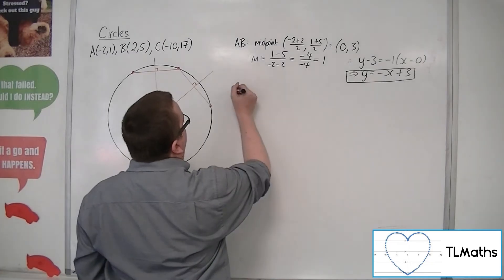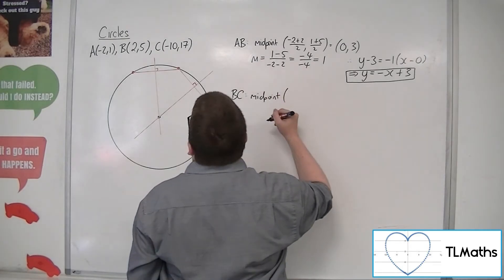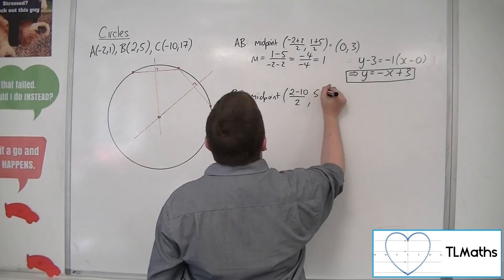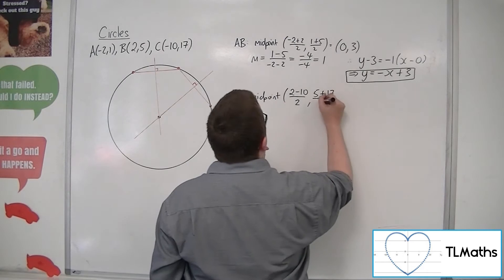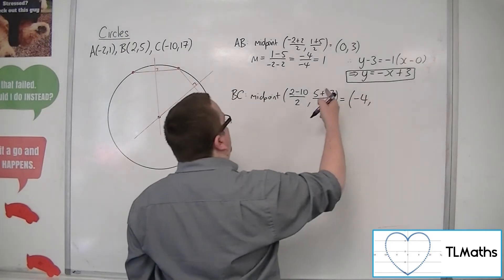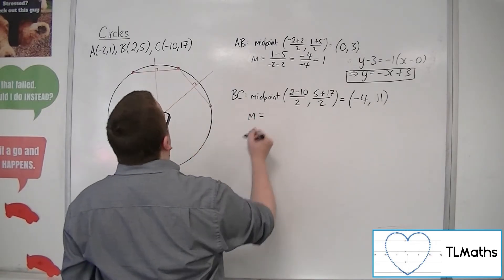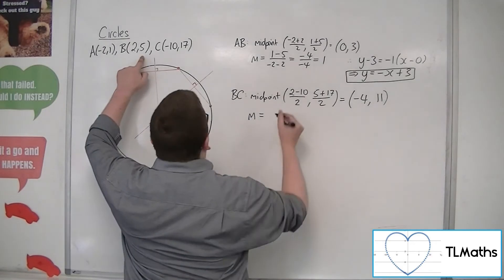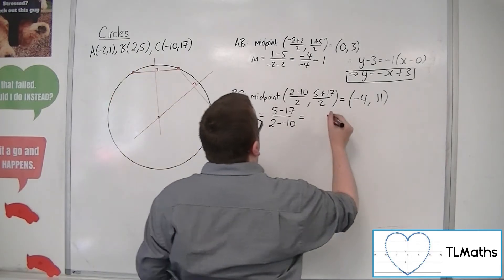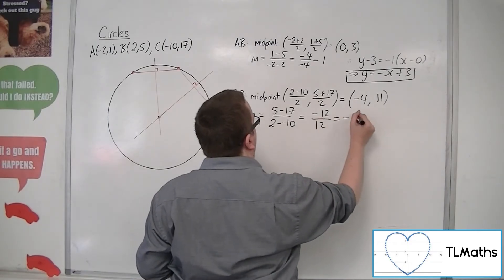Now let's try BC. First of all, the midpoint: the average of the x coordinates is 2 take away 10, which is minus 8 divided by 2, giving minus 4. And the average of the y coordinates is 5 plus 17, which is 22 divided by 2, giving 11. So the midpoint is (minus 4, 11). The gradient of this chord is 5 take away 17 over 2 take away minus 10, giving minus 12 over 12, which is minus 1.